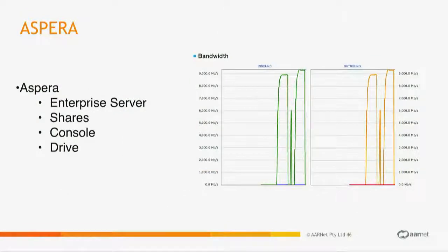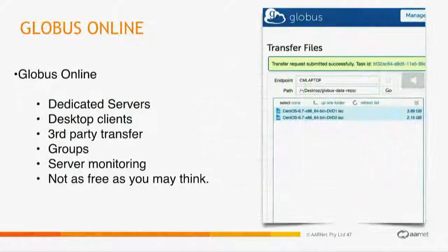Software: Aspera makes a huge difference when driving transfers. Globus also makes a huge difference, but it's not as free as it seems — as soon as you want to do groups or authentication, it costs money. So don't get tricked by thinking it's just open source.